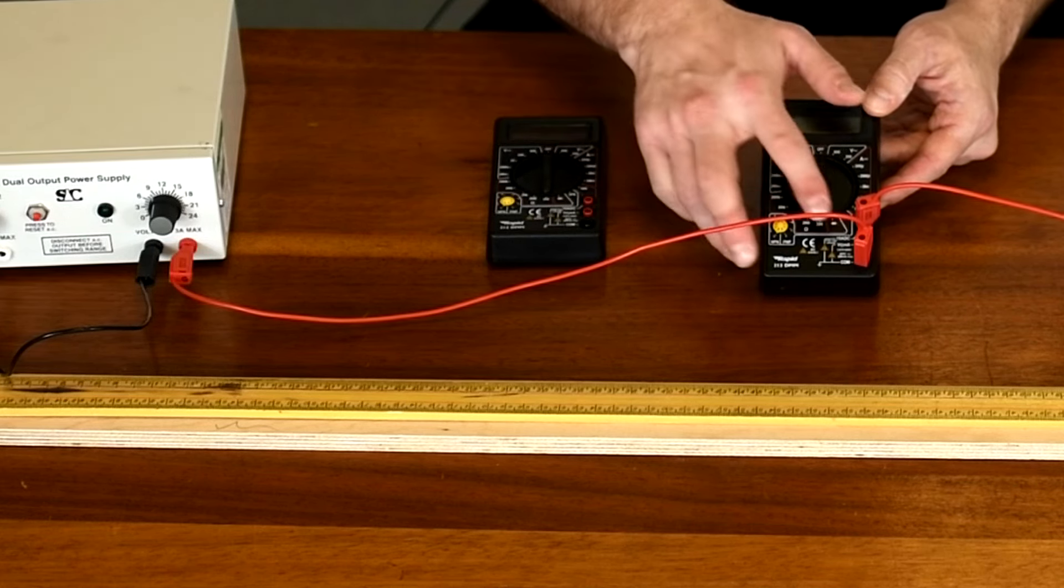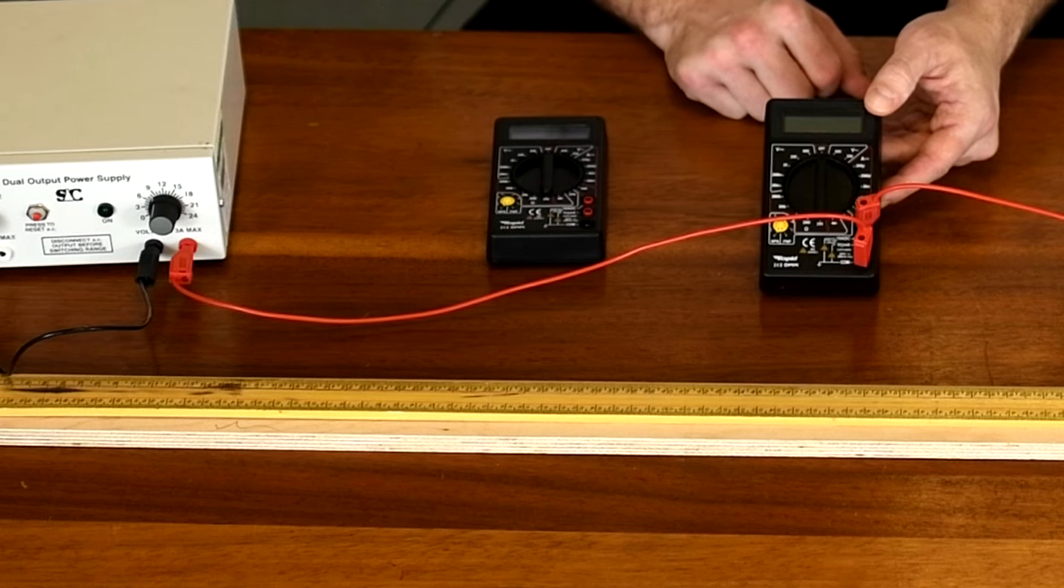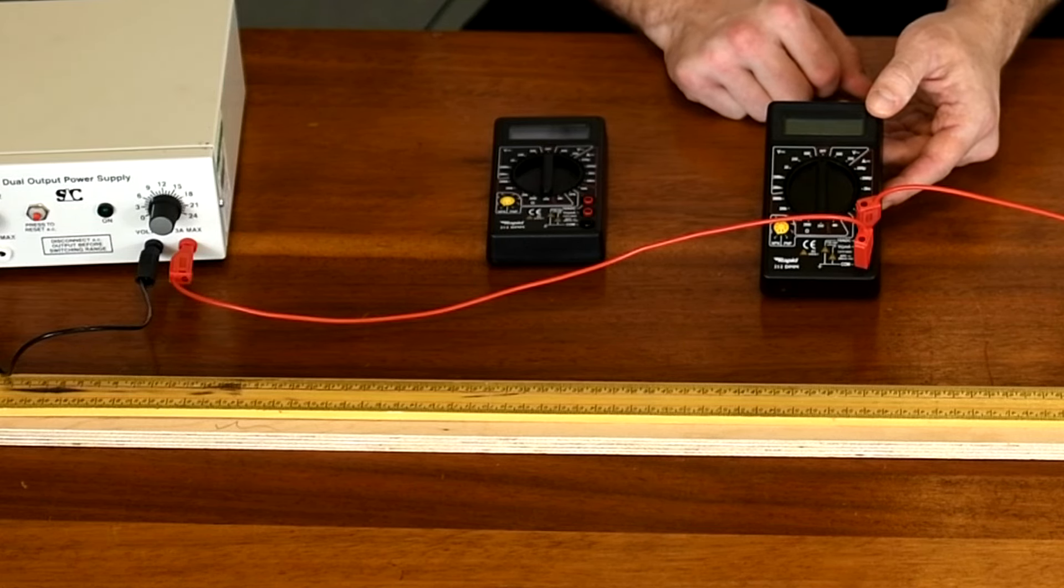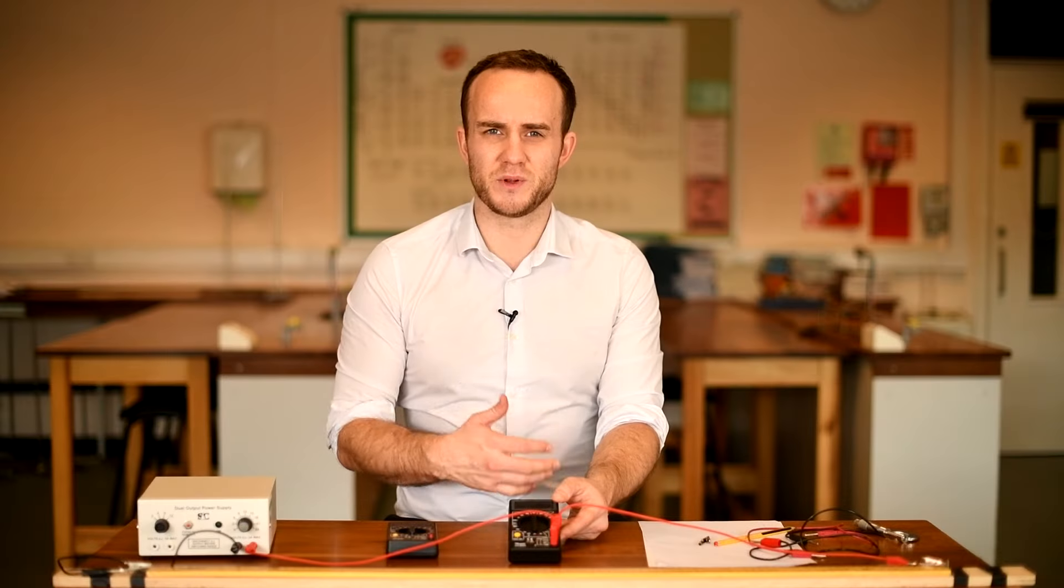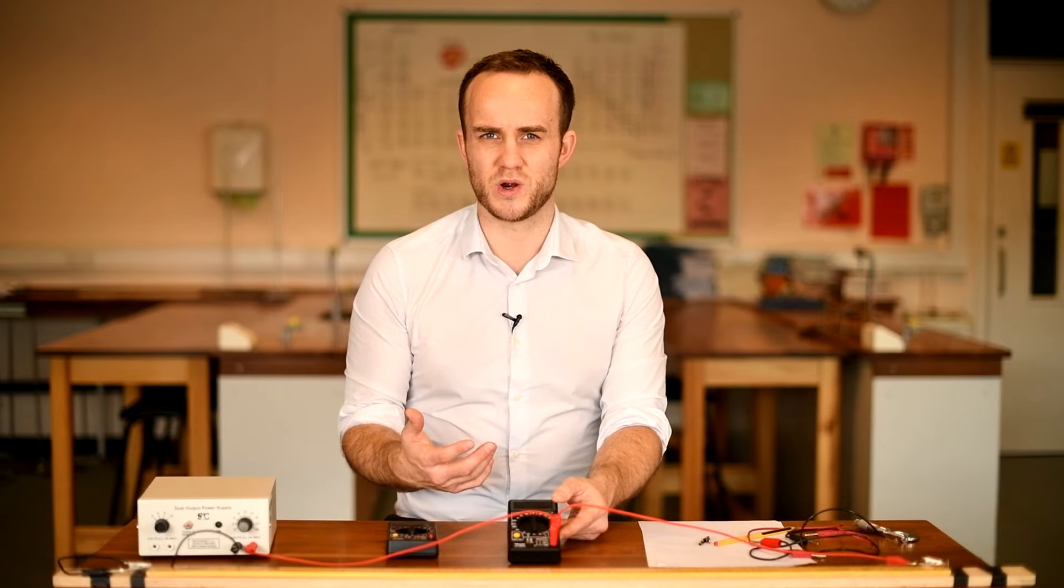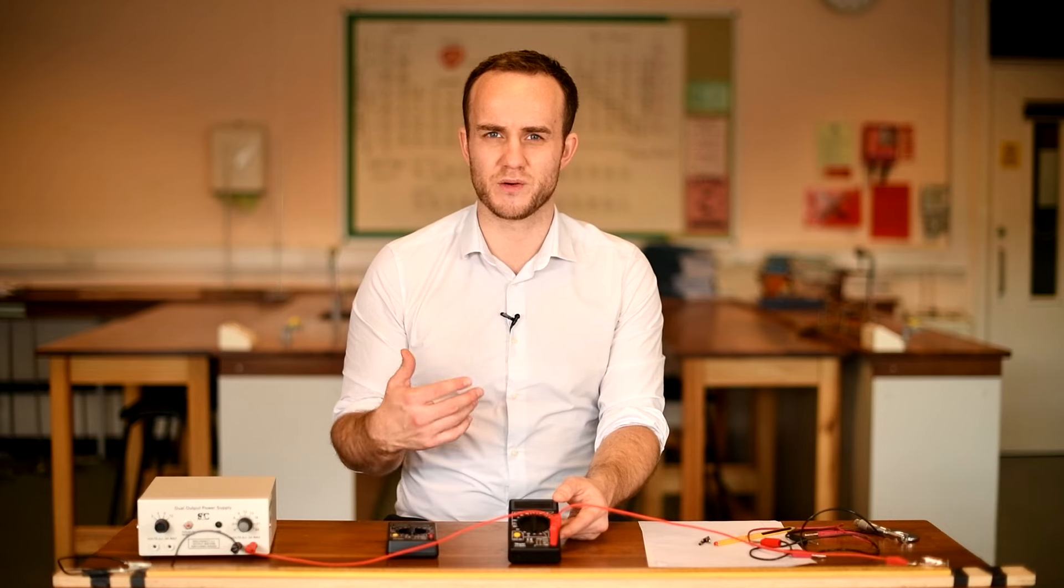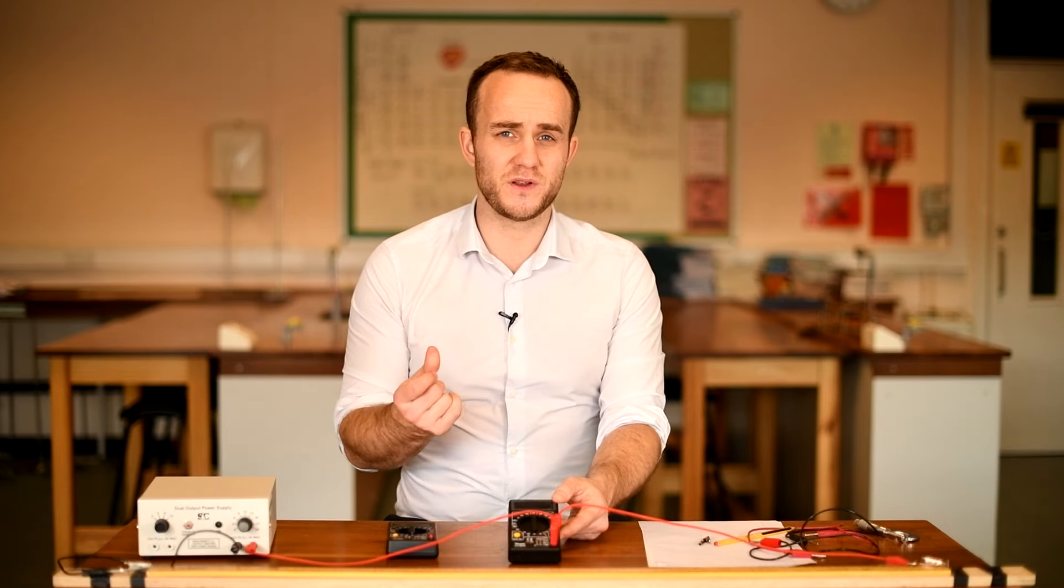We can see there that it says 200 milliamps max. Now we don't really know what the resistance of this wire is, so we don't know what kind of currents we're going to get, and so we might blow the fuse as soon as we turn it on.